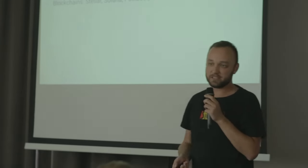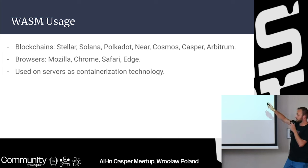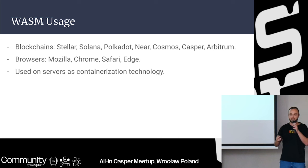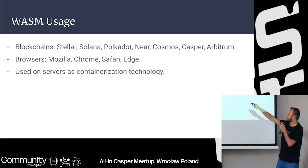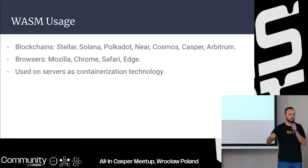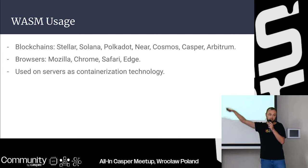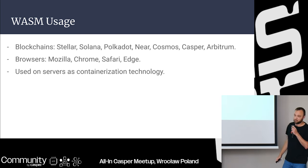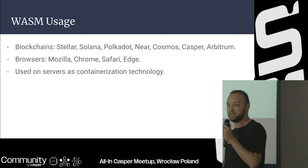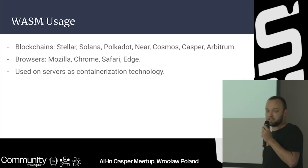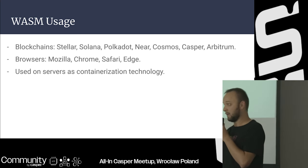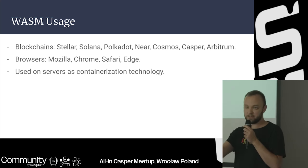The thing is, each of these blockchains had to build their own toolchain for Rust, and they each have their own ideas about how to build the system. Even though we have Web Assembly everywhere, it's different Web Assembly for each chain. It's not like EVM where every system has the same implementation. In browsers, all the major players got together and actually built Web Assembly — that's why browser WASM is so successful and even used for containerization on servers.